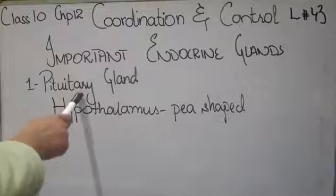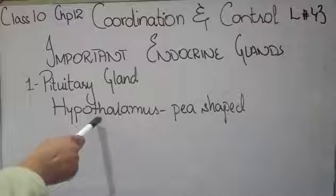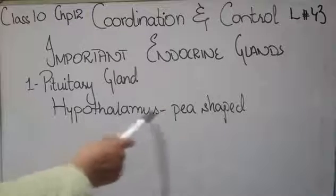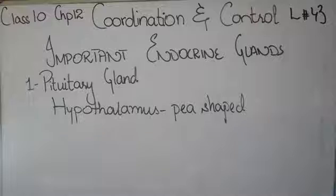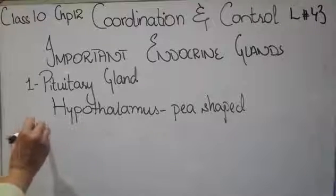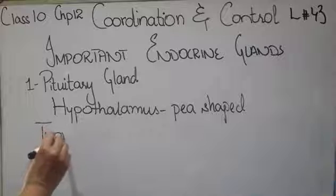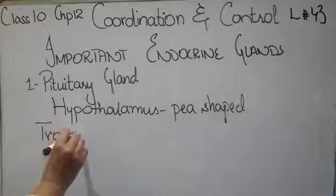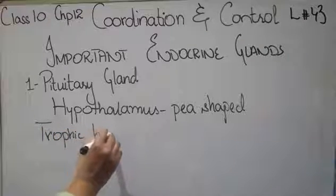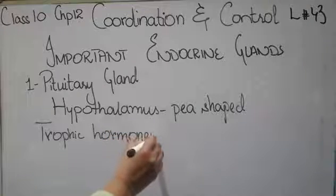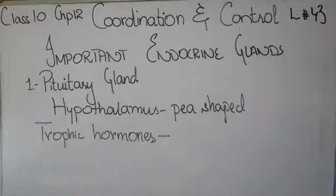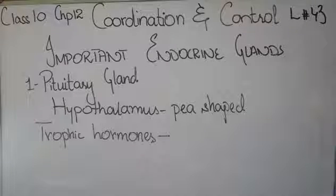The pituitary gland's location is in the hypothalamus of the brain — a P-shaped gland attached there. This gland releases very important hormones called trophic hormones. Trophic hormones are the hormones which the pituitary gland releases, and they regulate the role and secretions of the other endocrine glands.